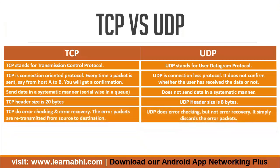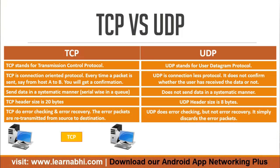TCP performs error checking and error recovery. Whenever data is sent using TCP, the protocol does error checking. If it finds any error, it sends the data back to the source PC and the data is retransmitted. Once everything is correct, the TCP protocol passes the data to the destination.